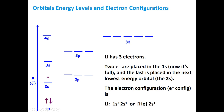When we write the electron configuration, it's going to be 1s2 — where 1s is the orbital and the superscript 2 is the number of electrons in it. Then next is 2s with only one electron in it, written as 2s1. The other way we can write this is to write the noble gas atomic symbol in square brackets, and then the valence electrons left over after that.